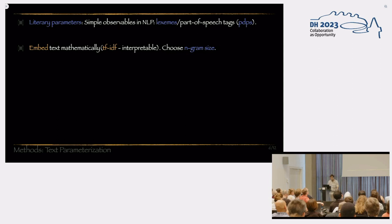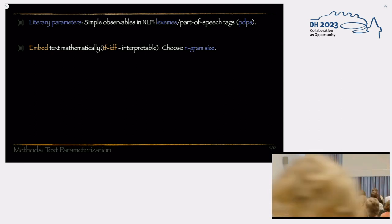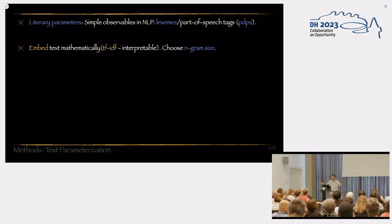Second, we embed the text mathematically using TF-IDF. I guess I don't have to explain to anybody what it means, but if there are any questions, then I warmly refer you to the paper. The second parameter that we choose is the n-gram size. So, we can choose multiple n-gram sizes by which to embed the text.